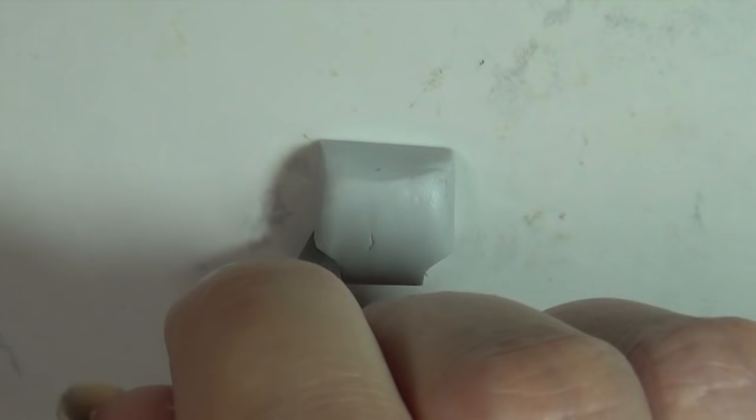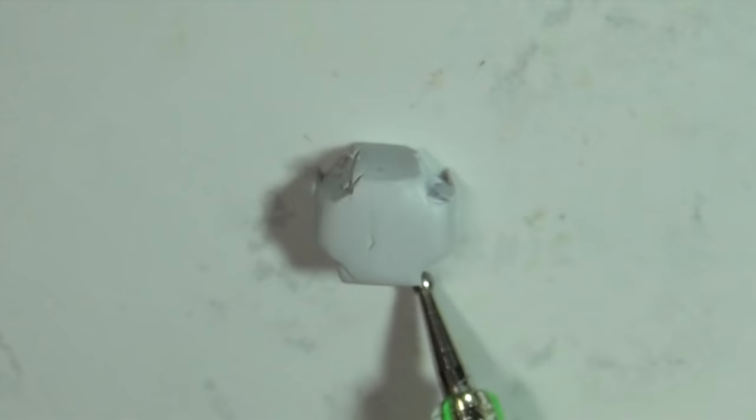I then use my exacto knife to cut away the corners and an inverted circle shape. I also use the dotting tool to smooth it out.